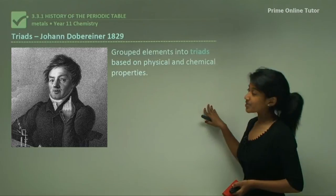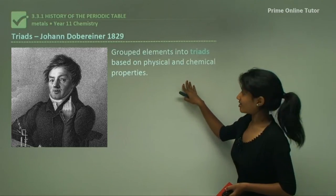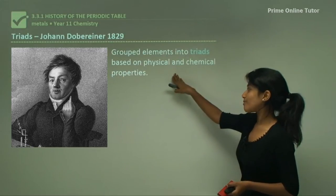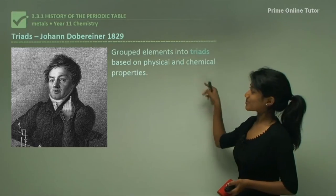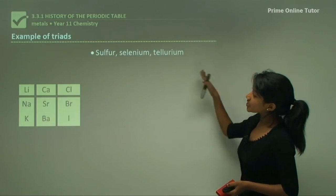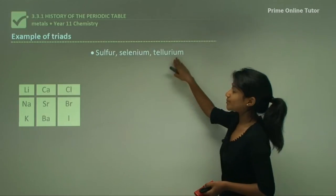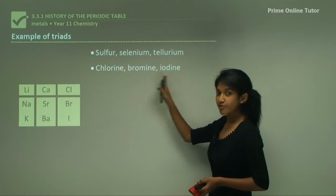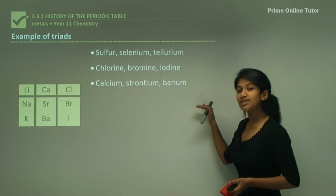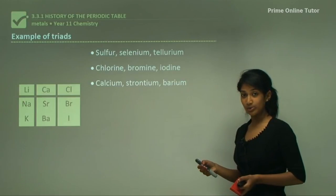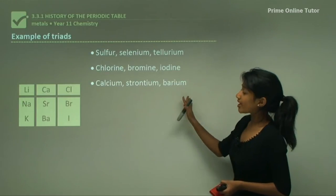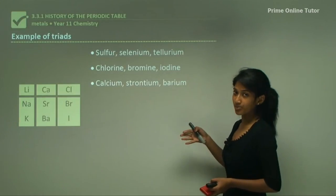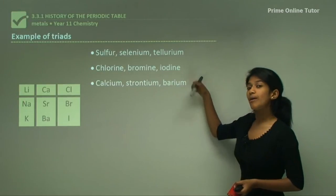Then came Döbereiner. He worked in 1829 to group elements into triads, also based on chemical and physical properties. Some of the triads include sulfur, selenium and tellurium, and also chlorine, bromine and iodine. If you notice, all these elements are from the same group in your modern periodic table. So if you grab your periodic table right now, you'll be able to see that all three elements in each triad are from the same group — that's how he was able to make up a triad.